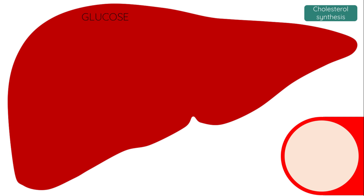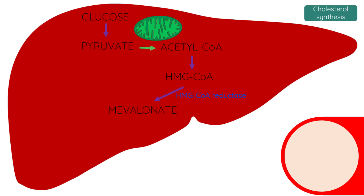In glycolysis, glucose is converted into pyruvate and subsequently acetyl-CoA in the mitochondria. The liver then turns acetyl-CoA into cholesterol first by converting it into hydroxymethylglutaryl-CoA or HMG-CoA. An enzyme called HMG-CoA reductase then produces mevalonic acid and eventually cholesterol which is used to produce steroid hormones, cell membranes and bile acids.